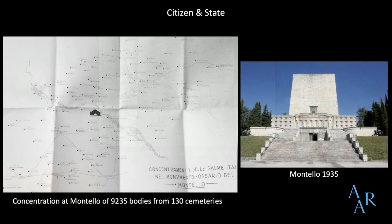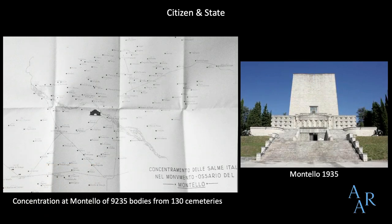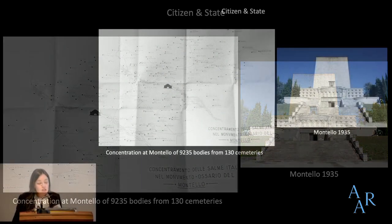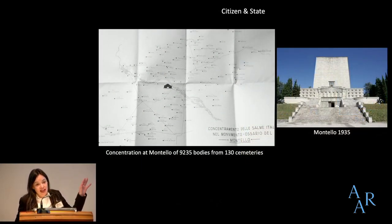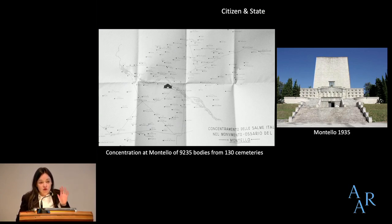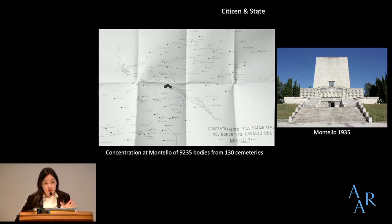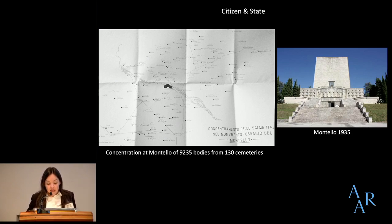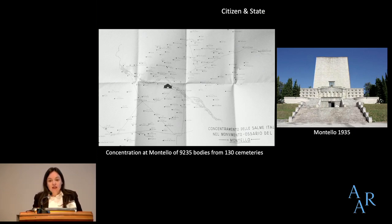Previously, the commemoration of the war dead had been left to private associations, local councils, and the clergy. But from 1928, it was forbidden to commemorate fallen soldiers without state approval. With the creation of the ossuaries, the state monopolized control over the dead. The ossuaries were built and administered by a military commission that still exists today, responding directly to Mussolini. This political concentration of power over the dead was paralleled by their geographical concentration.